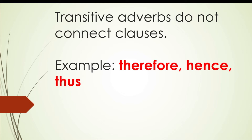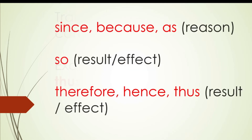In this video, we will learn about some conjunctions and transitive adverbs that express the idea of cause and effect. As you can see here, the conjunctions since, because, and as give the reason or the cause. So is also a conjunction but it expresses the result or effect. Now in the third line, we have some transitive adverbs: therefore, hence, and thus. They are not conjunctions but they also express the result or the effect.